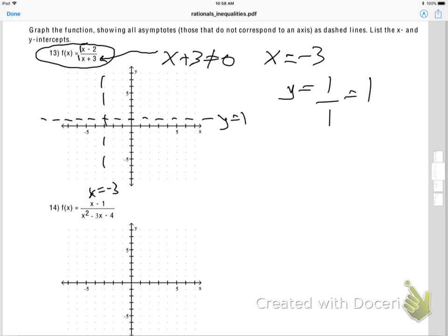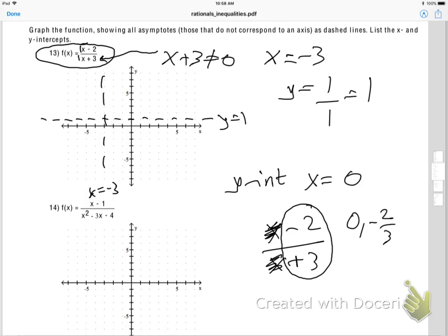So those are the asymptotes done. Now, how do you find the x-intercepts and the y-intercepts? Well, remember, a y-intercept is when x equals zero. So look at this. Let's go back to that x minus two over x plus three. If that's zero and that's zero, can you see negative two-thirds would be the y-intercept.